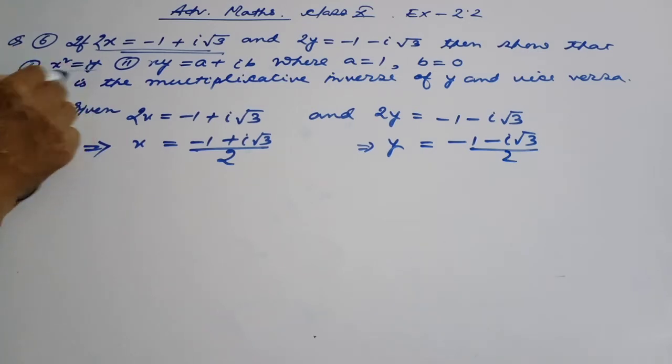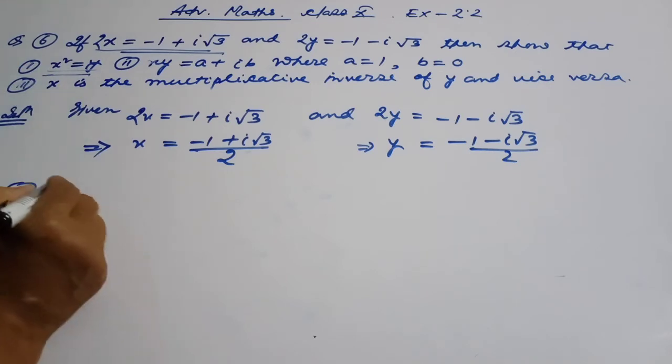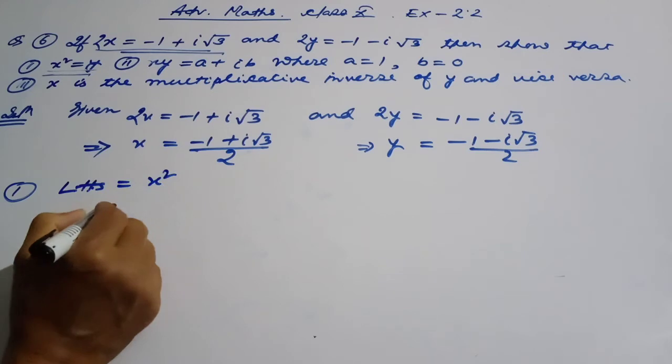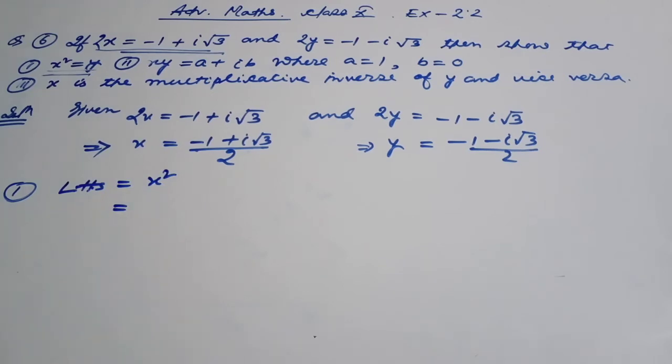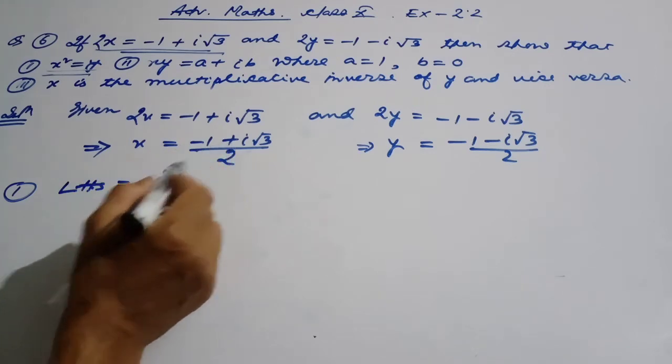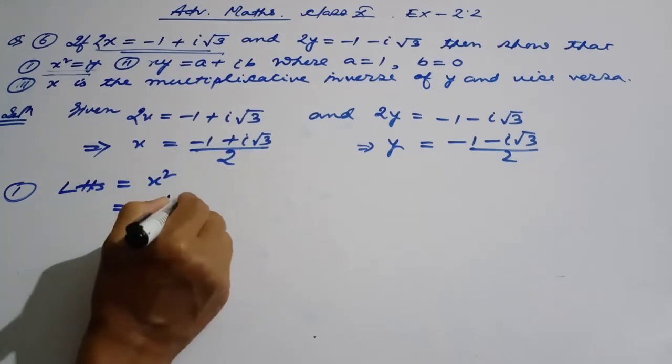This problem given y value to minus 1 minus i root 3 by 2. The place on the market is x square is equal to y. We're going to keep in the inside x square.